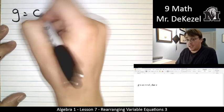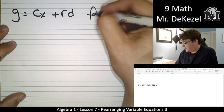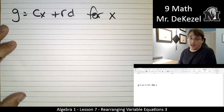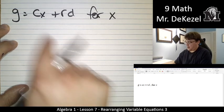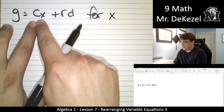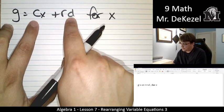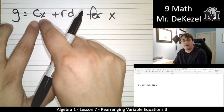g is equal to cx plus rd. And we're solving again for x. We've been looking for it for a long time. We're going to find it. Okay. We want to get x all by itself. We've got c and we've got r and d. And these are added to this term. This is the term we want to get by itself.